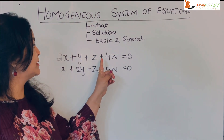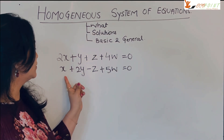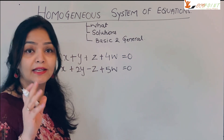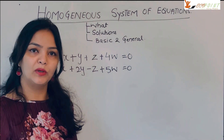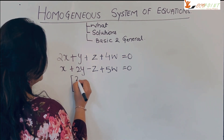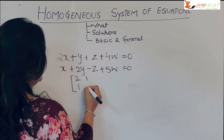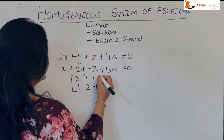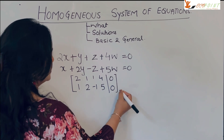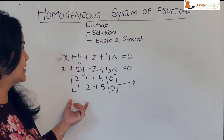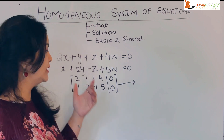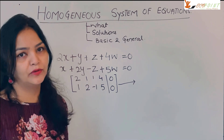Suppose we have two equations: 2x + y + z + 4w = 0 and x + 2y − z + 5w = 0. These are two equations in four variables. Let's solve using row operations. In matrix form, the augmented matrix is [2, 1, 1, 4 | 0] and [1, 2, −1, 5 | 0]. Dealing with the augmented matrix in a homogeneous system is simple because the right-hand side is always 0, so everything you work on is from A.